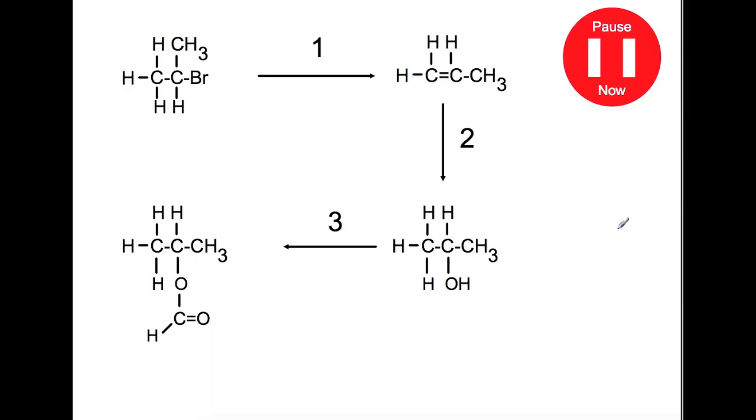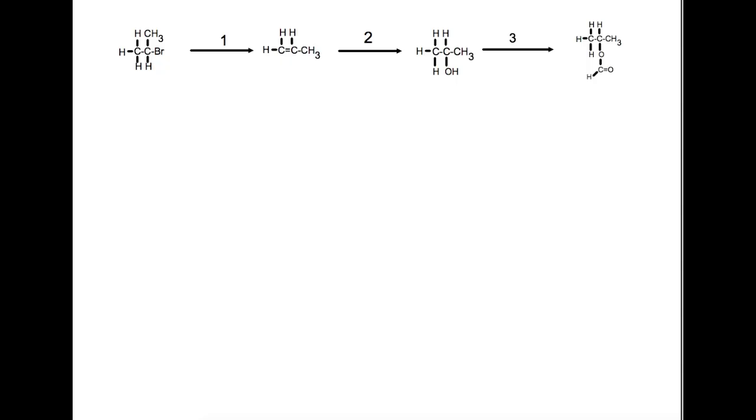In this next example it's a three-step mechanism. So we're starting from a haloalkane then we're going on to an alkene which is then moving on to an alcohol and finally an ester. Again for this you should know the type of reaction, the reagents involved and any particular mechanisms. So in the first step you can see that we are going from a haloalkane to an alkene. So step number one is an elimination reaction. And to carry out an elimination reaction you need to use KOH in ethanol.